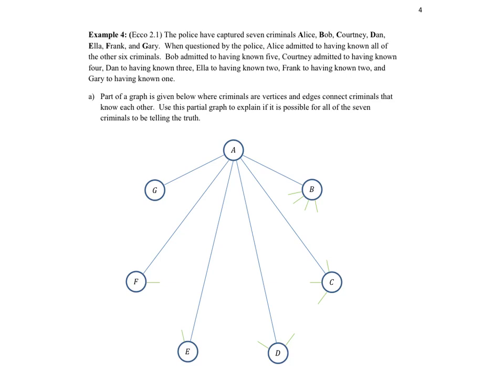In a previous video, we discussed something called the handshaking lemma. It said that if we're to build this graph and have edges between all the vertices, so make all of these connections that could possibly be made, it must be the case that there is an even number of odd degree vertices. Let's count up how many odd vertices there are.